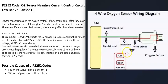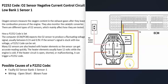Usually the heater elements have 12 volts going to them and are on a fuse and a relay. The oxygen sensor part has two wires going back to the computer: a signal wire and a signal ground wire. If you get a wiring schematic for the vehicle, you can check this wiring and make sure you have 12 volts going to that heater element when the engine is cold.